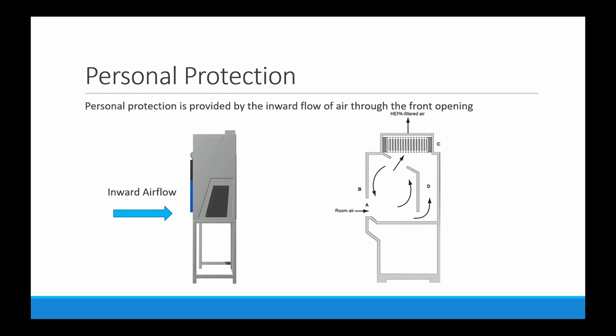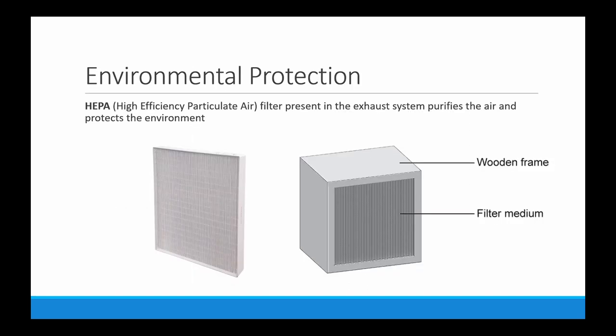Personal protection is provided by the inward flow of air through the front opening. Even if the air is contaminated inside, it will not move out due to the inward pressure. You can see in the diagram how the inward air is flowing and the path of the air inside the biosafety cabinet. For environmental protection, HEPA filters are used in the exhaust system to purify contaminated air which contains infectious pathogens.